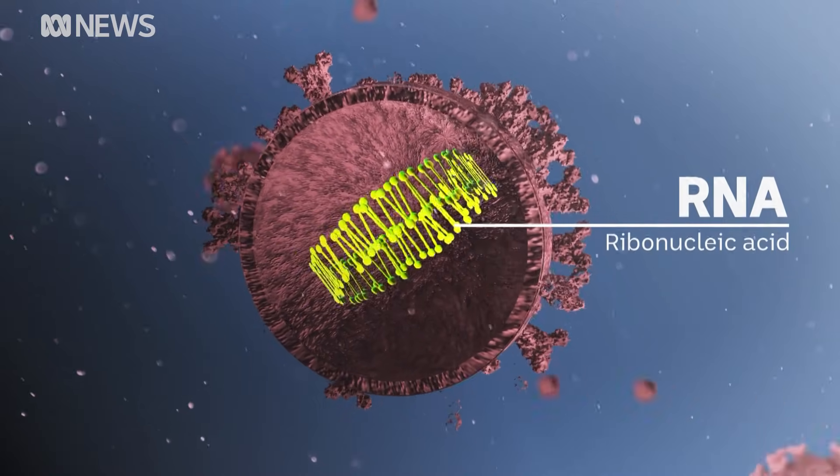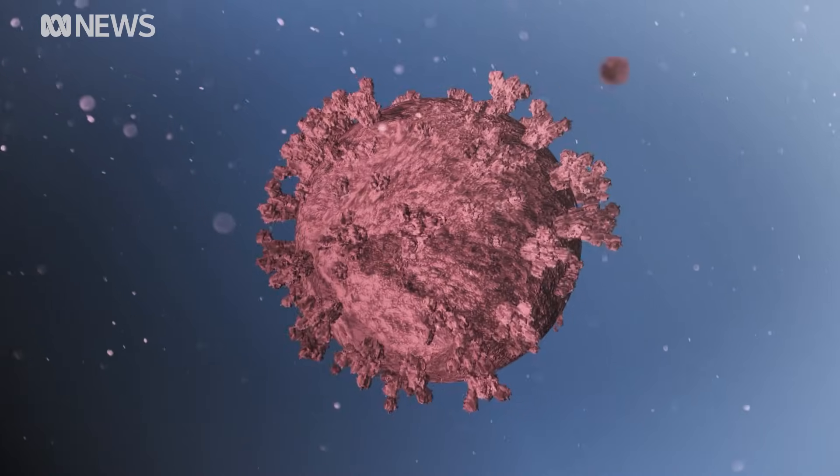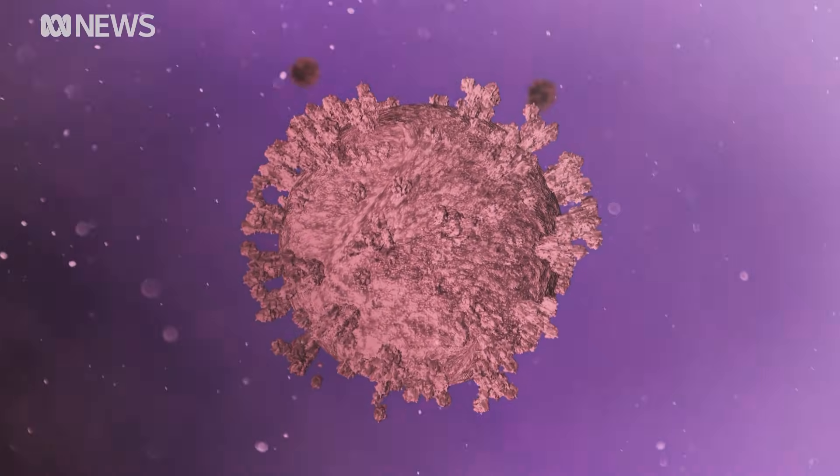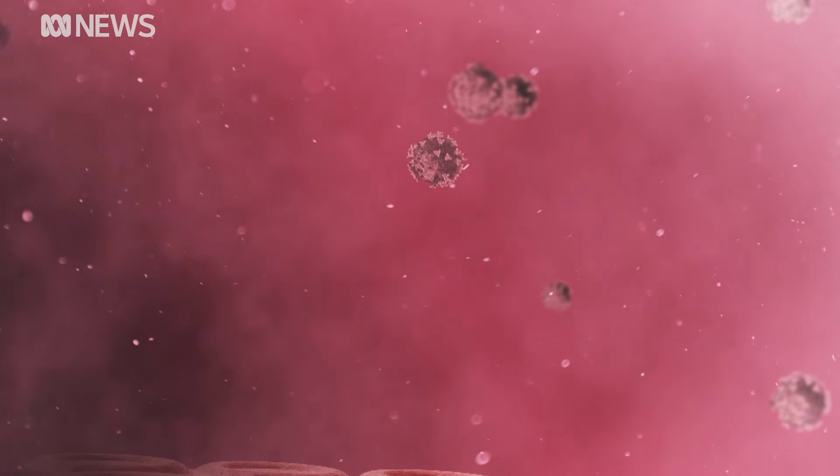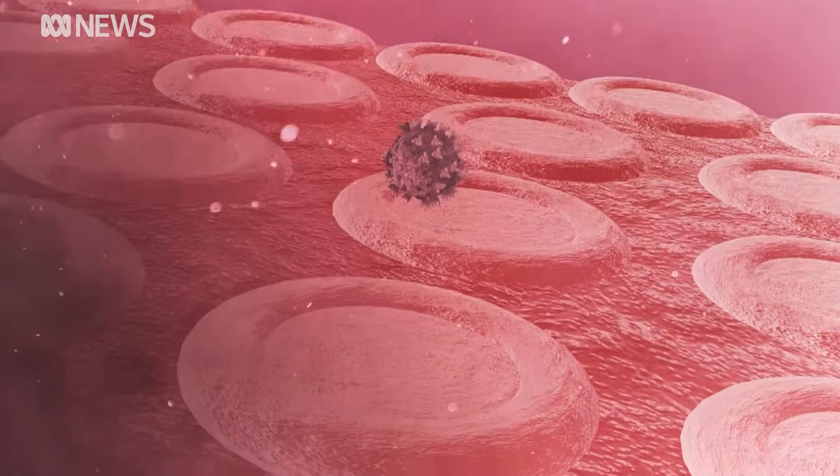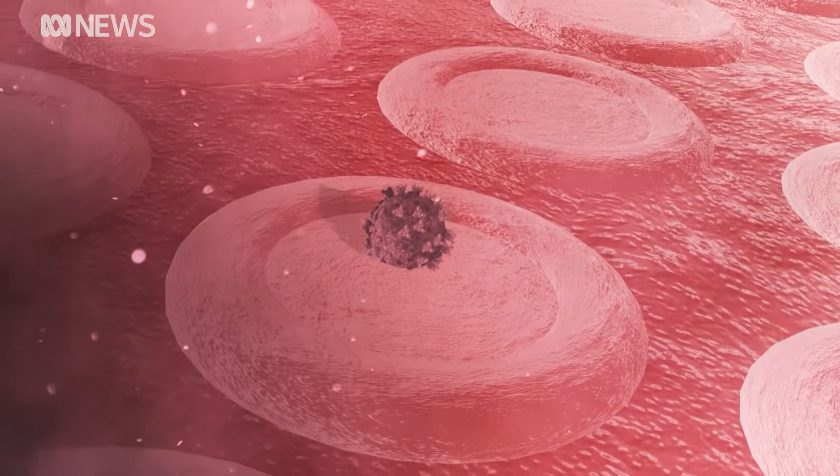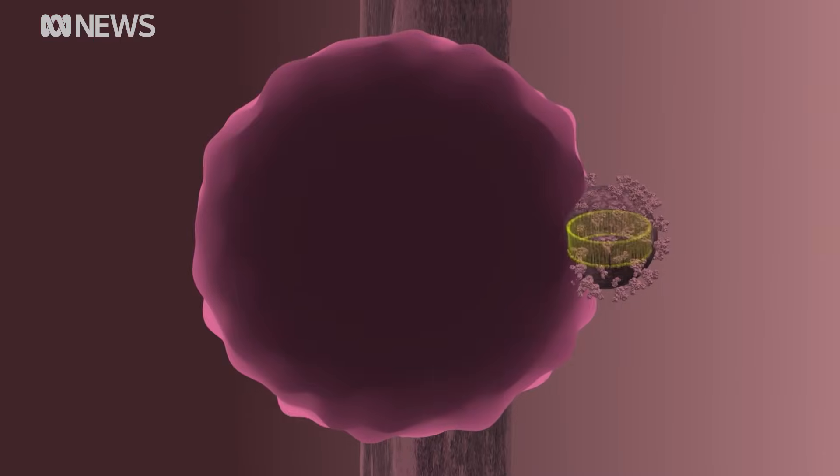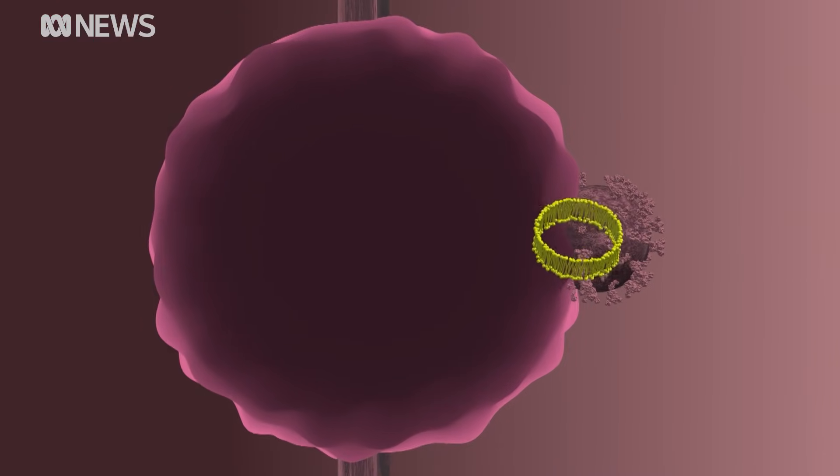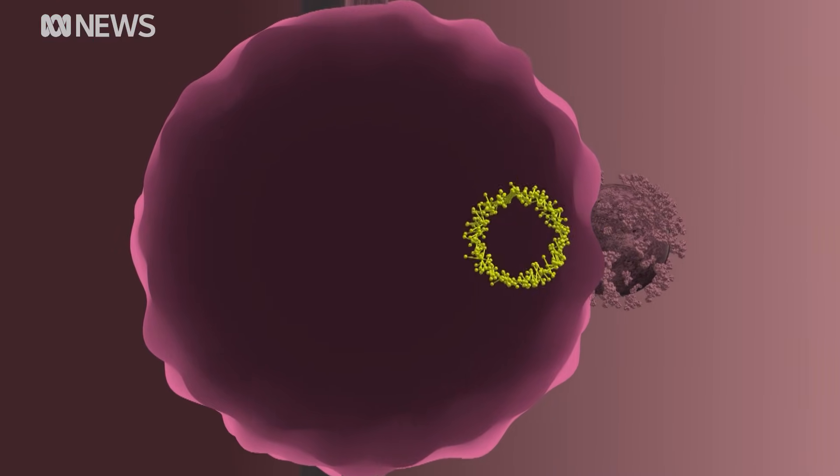But how does the viral RNA get into our bodies? It comes back to those protein spikes. After the virus has entered the human body, it uses those spikes to attach itself to a healthy cell in the respiratory system. Once that's done, the viral RNA is released and the takeover begins.